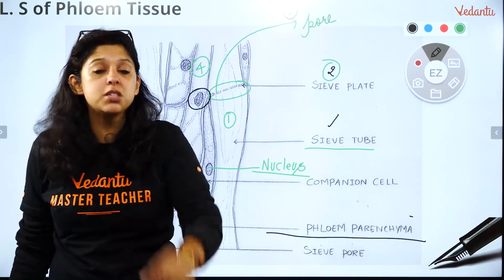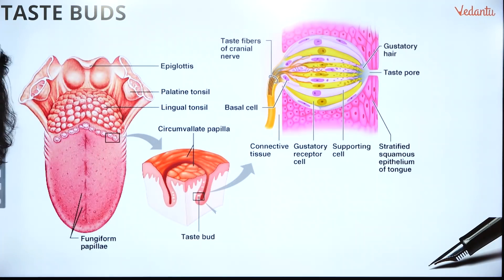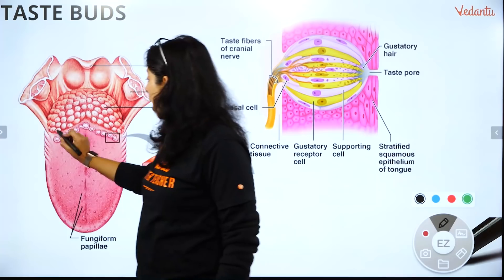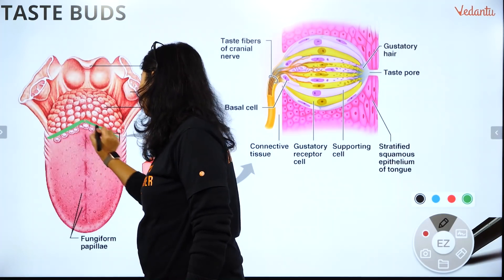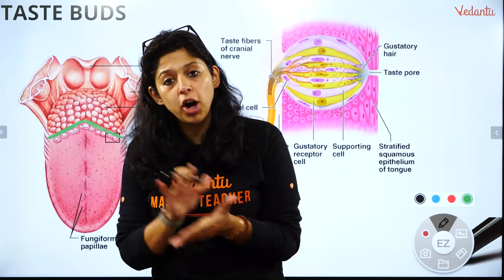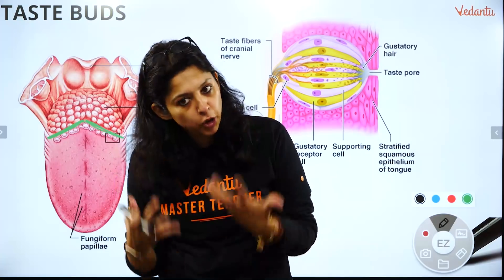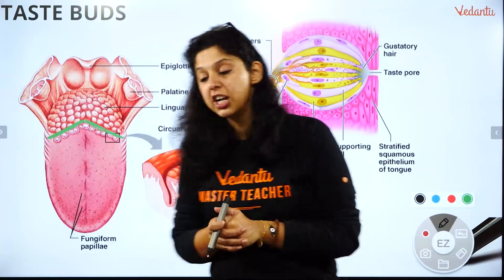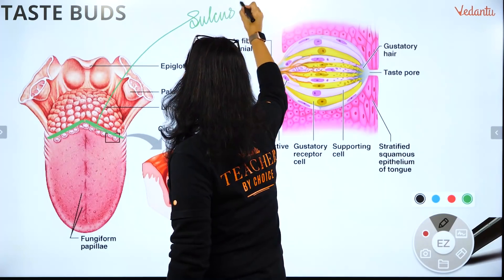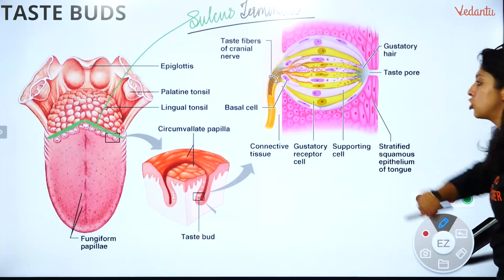Now the final diagramology — taste buds, very very important. Taste buds are on the tongue. Can you see this V-shaped line? What is this V-shaped line called? It is called sulcus terminalis — that's an MCQ point. If it comes in MCQ with A, B, C, D options, mark it as sulcus terminalis.